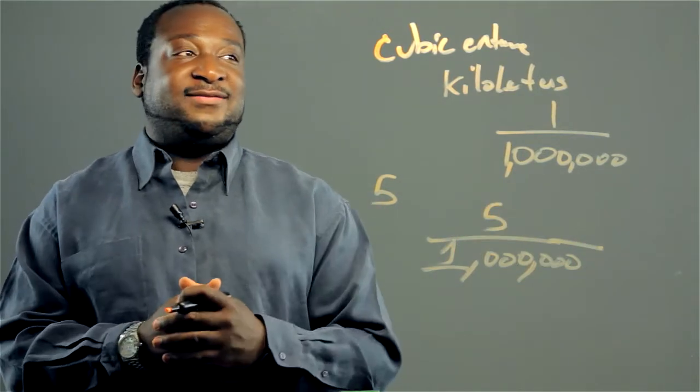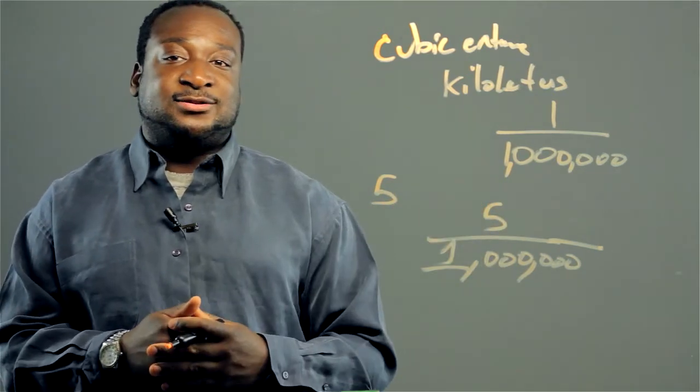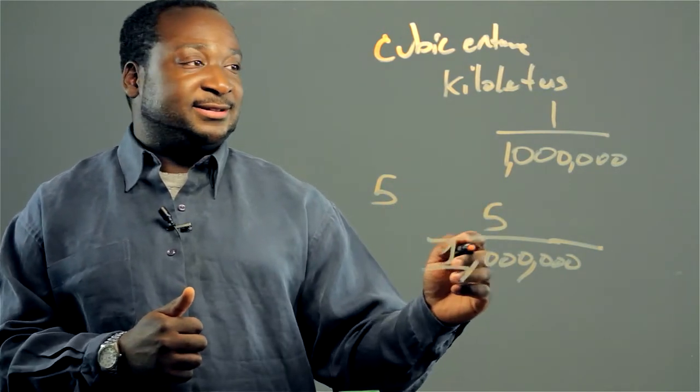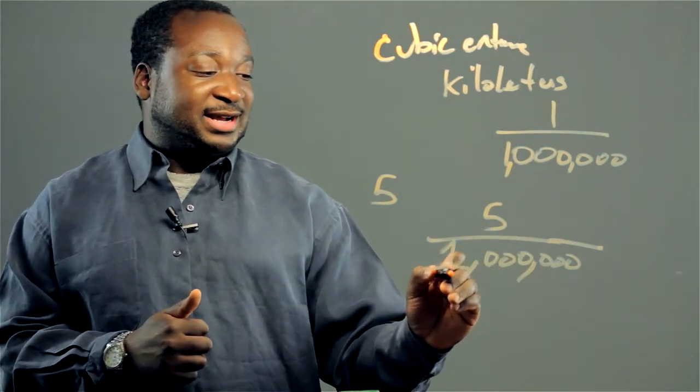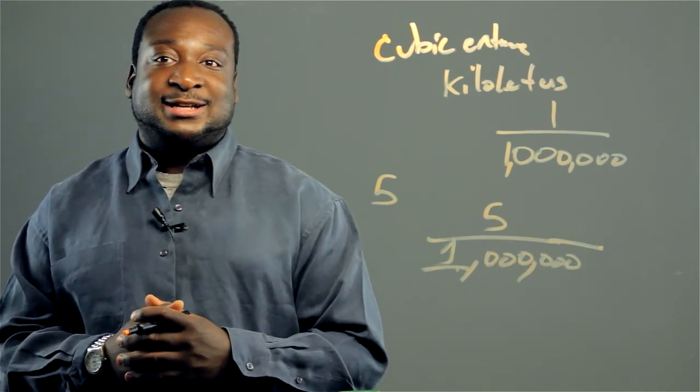So any number you have, if it's in cubic centimeters, if you want to convert it to kiloliters, just divide by one million and you get your answer.